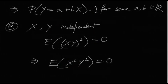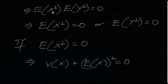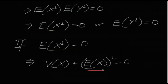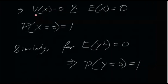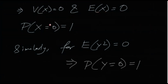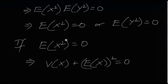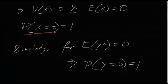Therefore either E[X²] = 0 or E[Y²] = 0. If E[X²] = 0, then Var(X) + (E[X])² = 0. Both terms are non-negative, so Var(X) = 0 and E[X] = 0, meaning X is degenerate at zero, so P(X = 0) = 1.